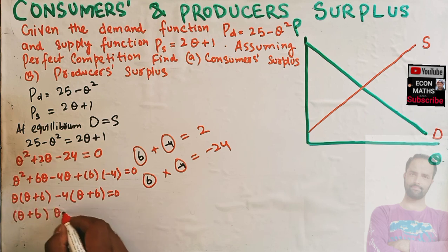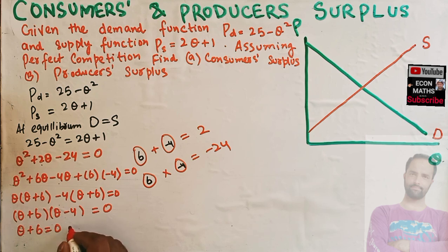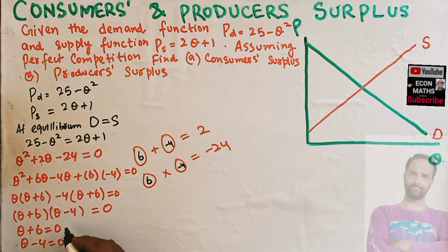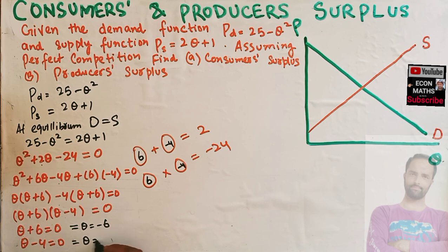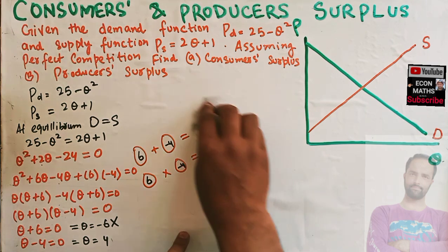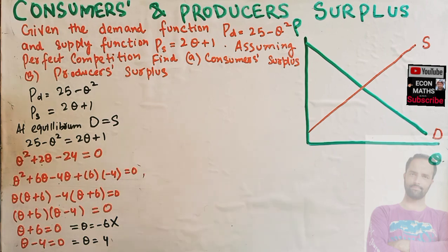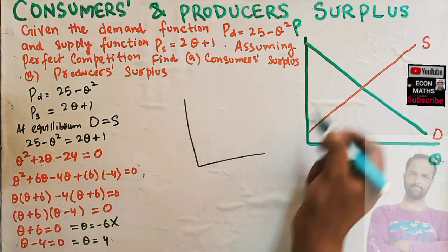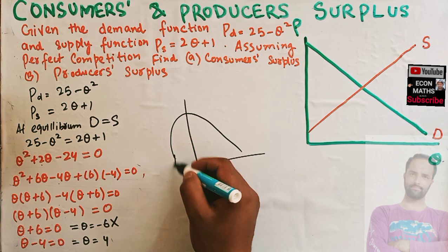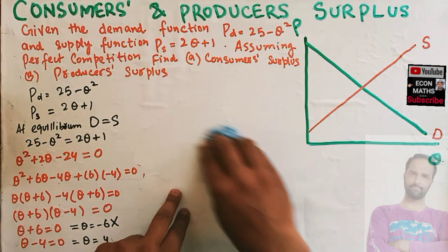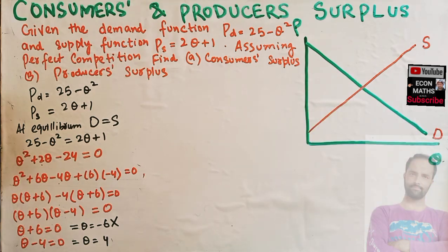Taking (q + 6) common, we get (q + 6)(q minus 4) = 0. This means either q + 6 = 0, giving q = minus 6, or q minus 4 = 0, giving q = 4. Since quantity cannot be negative, we rule out q = minus 6. Therefore, the equilibrium quantity is q = 4.